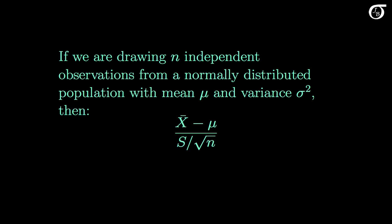If we are drawing n independent observations from a normally distributed population with mean μ and variance σ², then the quantity x̄ minus μ over s over the square root of n has the t-distribution with n-1 degrees of freedom.